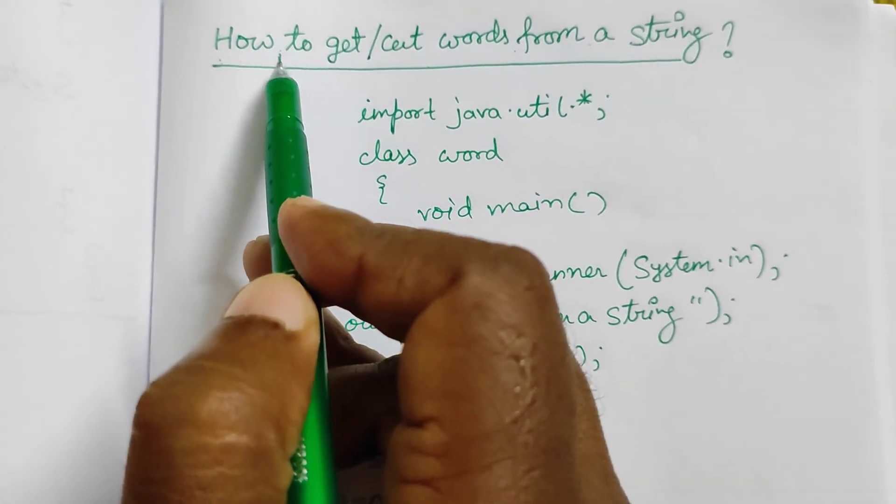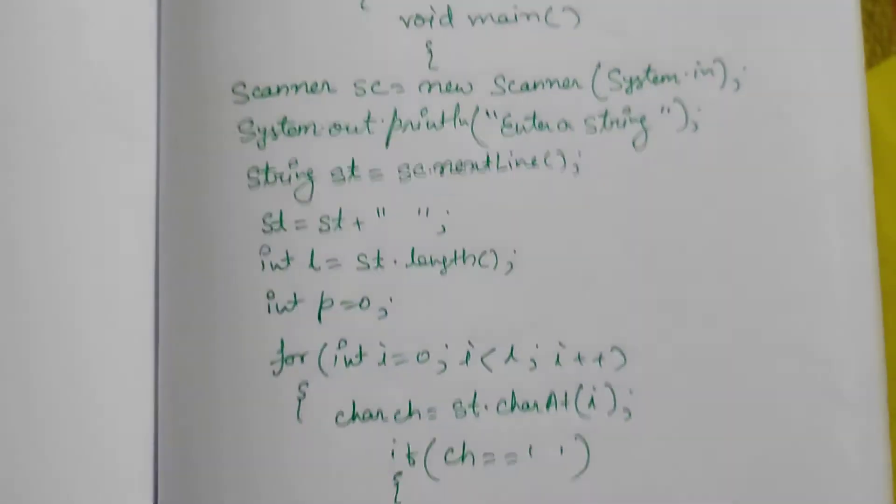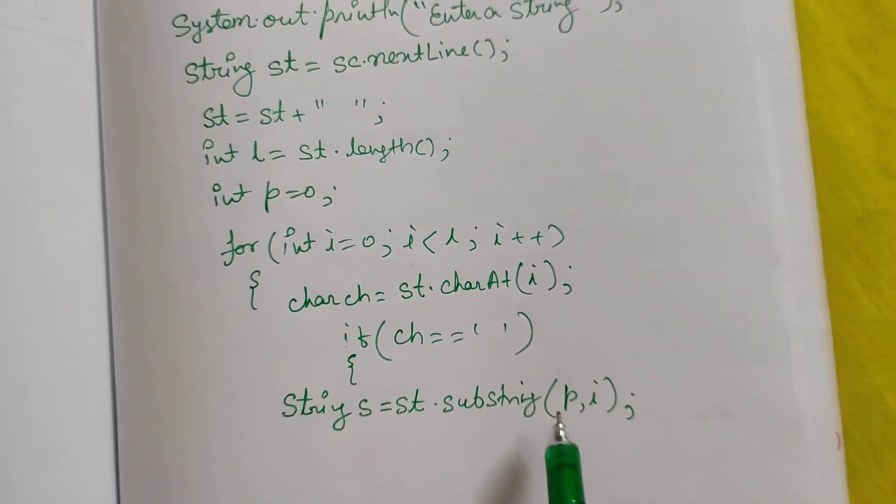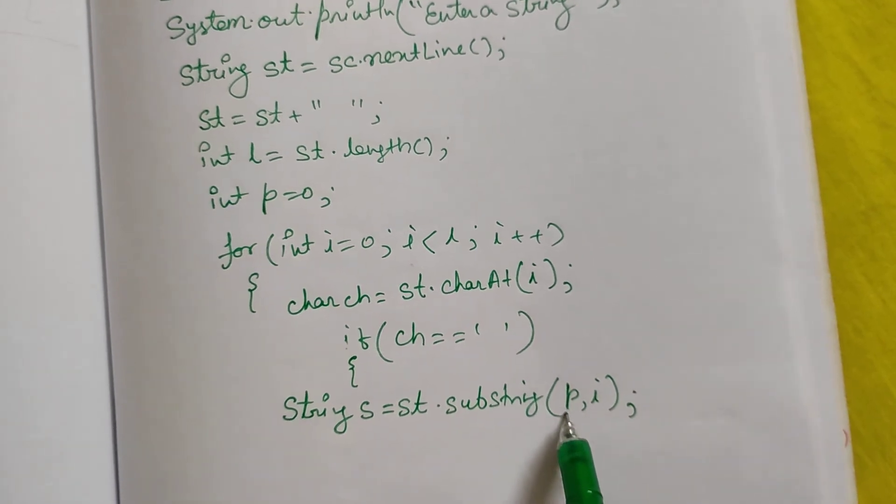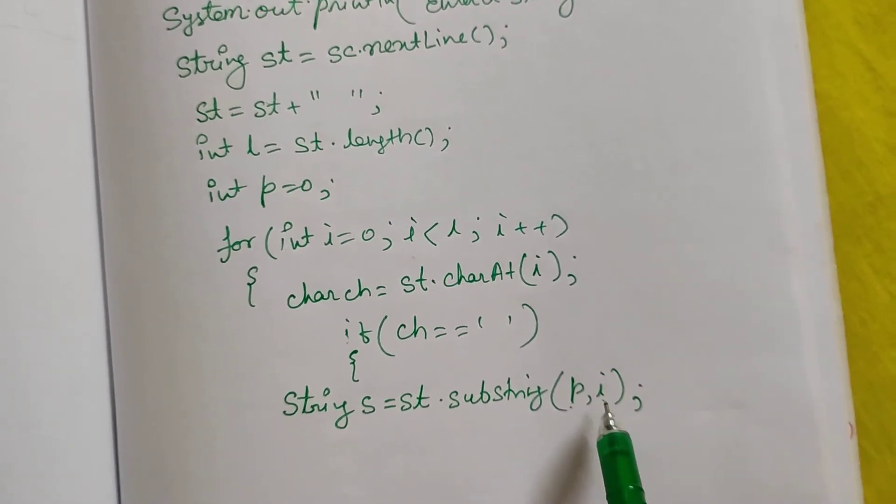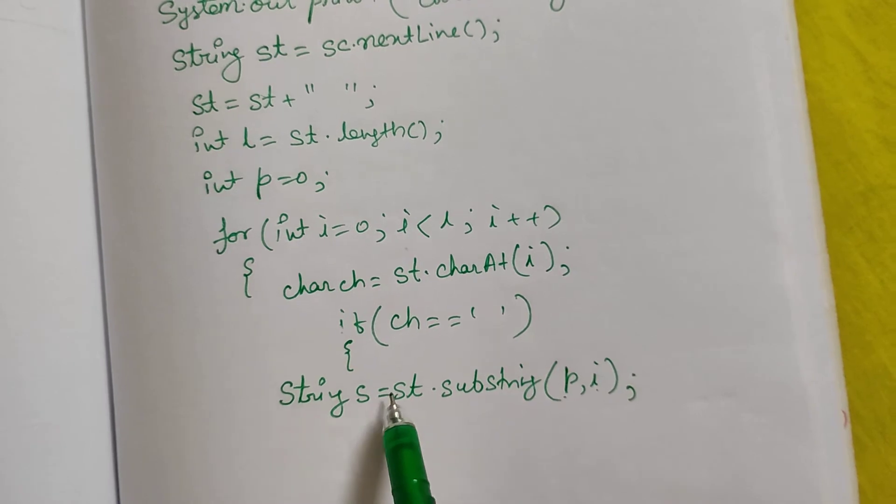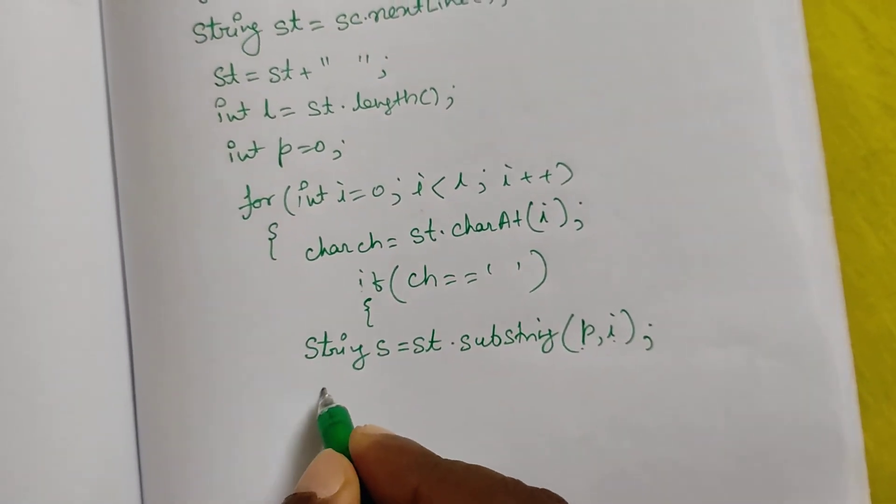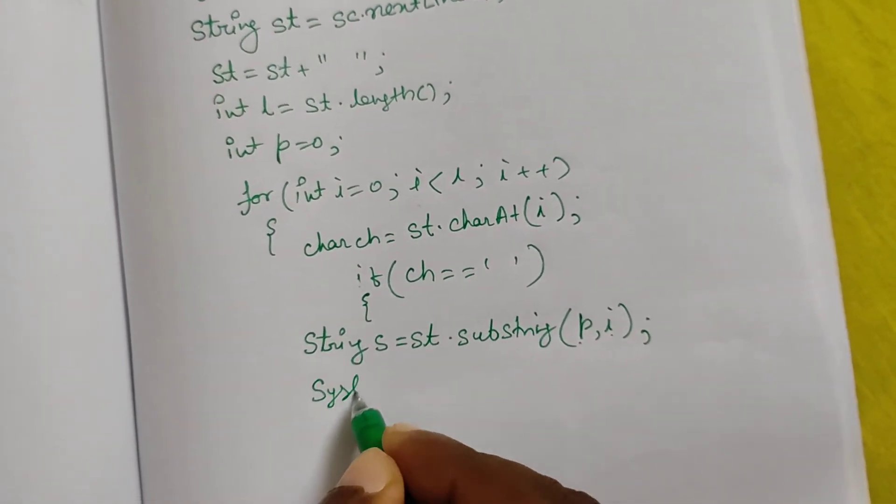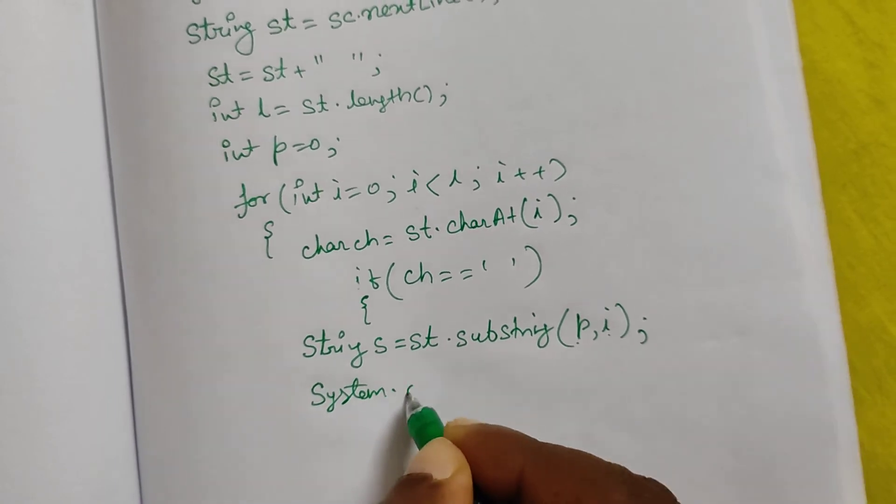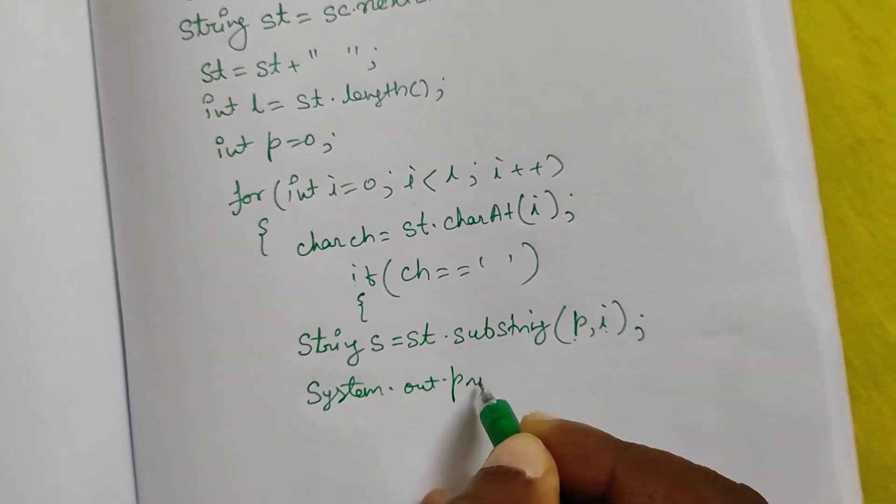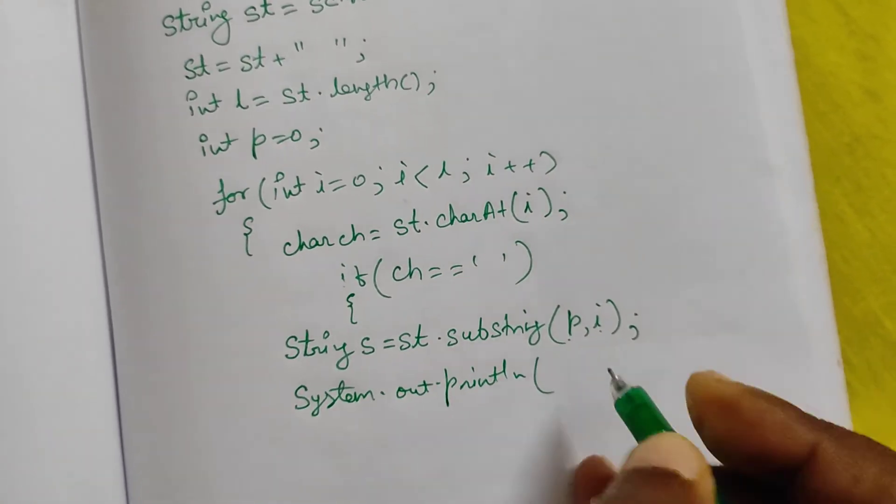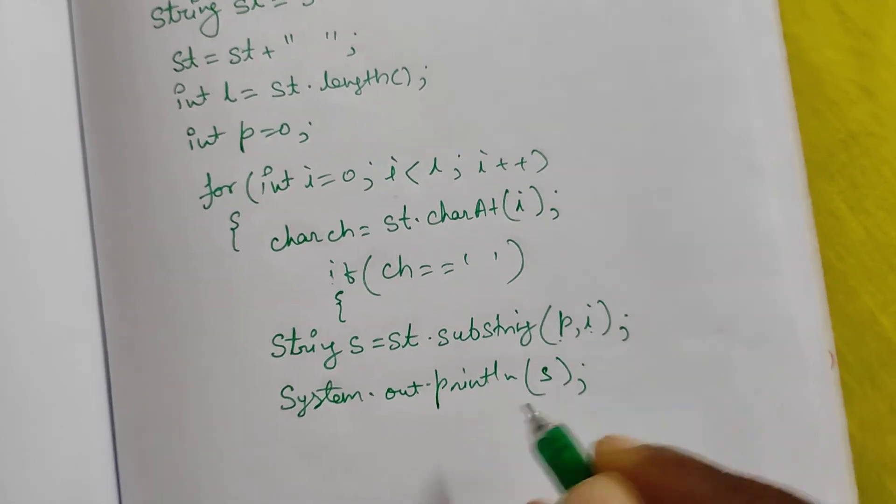It will cut i minus 1. We know that substring takes starting from p, ending i minus 1. So it will cut the word and store in s. Then print that word: System.out.println(s). Simply we can print that s.